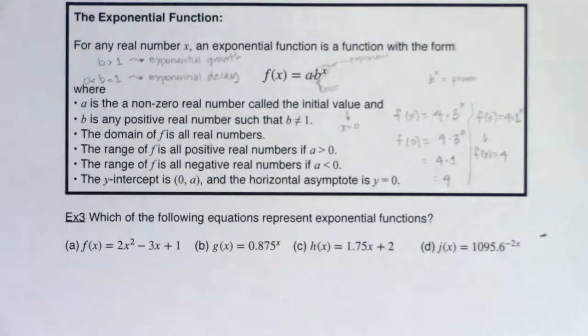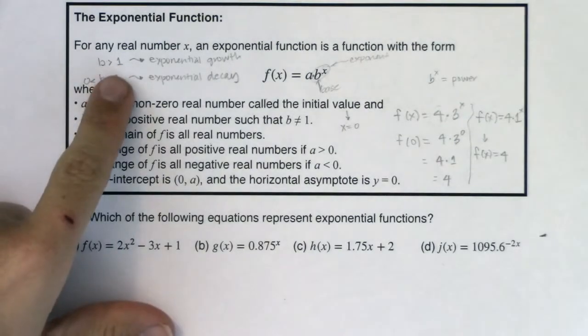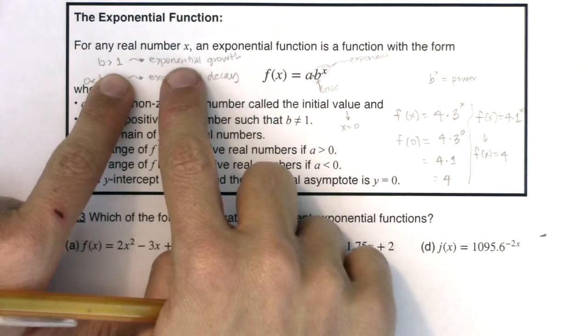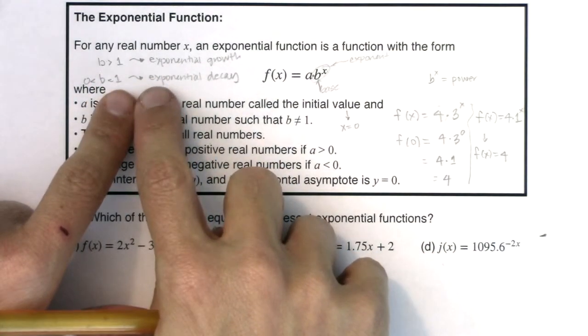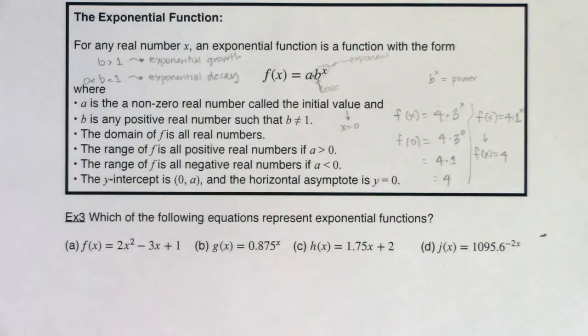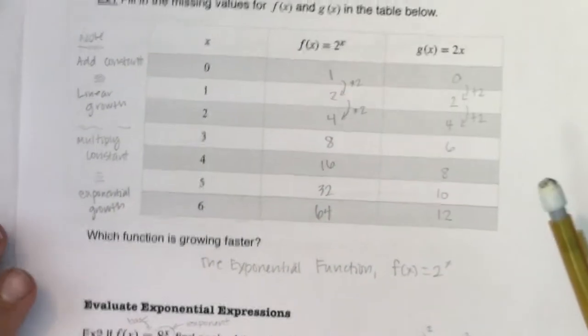And anytime b is less than 1, or I should say trapped between 0 and 1, you're going to have exponential decay. When I say exponential growth, that means as your x values get larger, so do your y values. And when I say exponential decay, that means as the x values get larger, your y values get smaller.